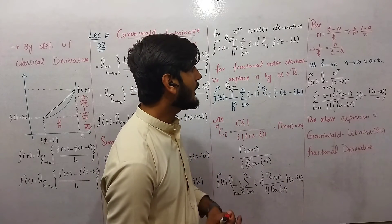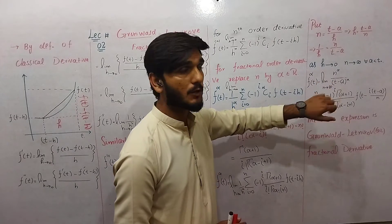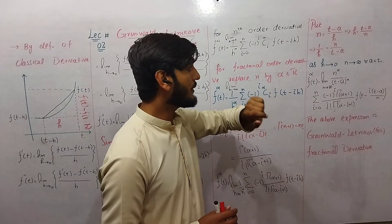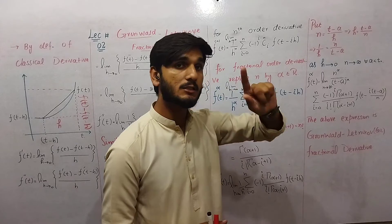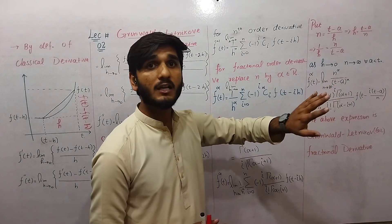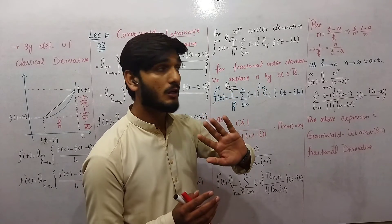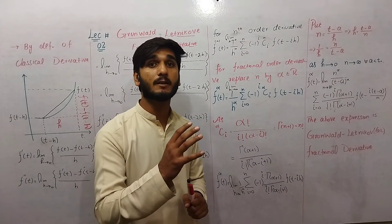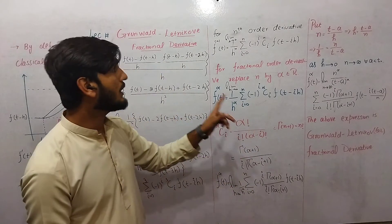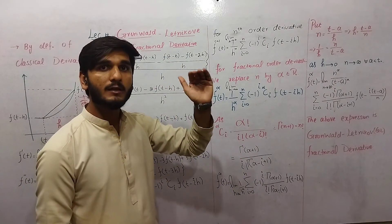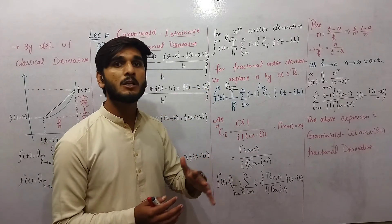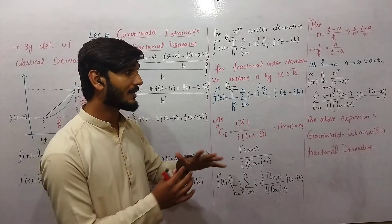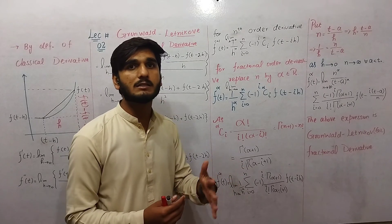The deficiency of the Grünwald formula is that n approaches infinity, so to find the derivative we require that the function exists on the limit as n approaches infinity, and also that the result exists at the endpoint at infinity. This is quite difficult for some functions. Therefore we need to look for another modification of the Grünwald formula. In the next lecture we will discuss further changes to this formula to find a more useful form of the fractional derivative. So keep watching.